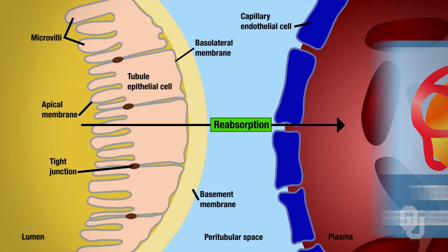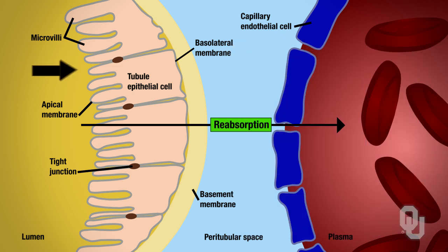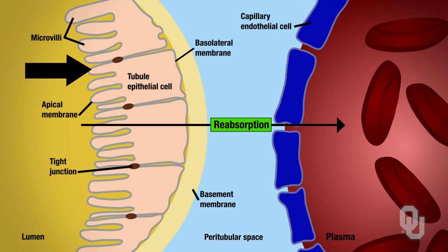The colors on your diagram are coordinated. The yellow part refers to the lumen — specifically the lumen of the proximal convoluted tubule. Here are the epithelial cells of the proximal convoluted tubule. The peritubular space is the interstitial fluid, and then you have the plasma, which is typically your peritubular capillary.